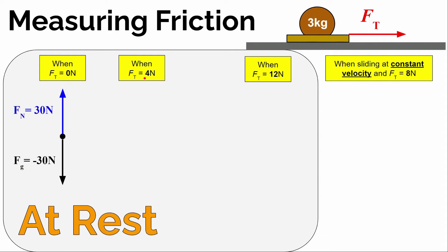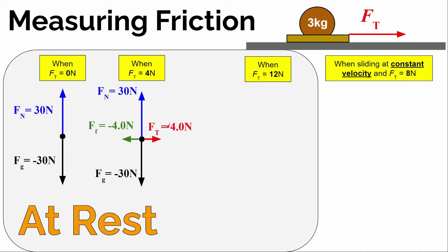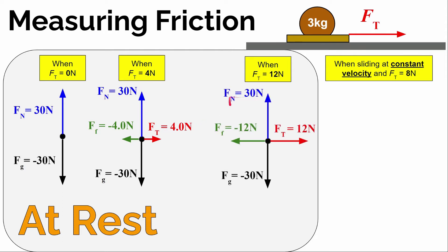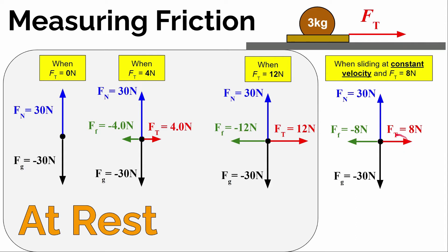When I pulled with 4 newtons, it didn't go anywhere, so the sum of the forces has to be zero. I pulled with 4 newtons of tension to the right and the table must have been pushing back to the left with 4 newtons so everything was balanced. When I pulled with up to 12 newtons to the right, the table was able to push back with up to 12 newtons — that was the maximum amount of force the table could exert. As soon as I got over that, it started to slide. Once it was sliding, it only took 8 newtons of force to keep it moving at a constant velocity, so the frictional force was only 8 newtons.